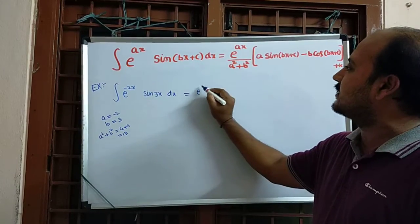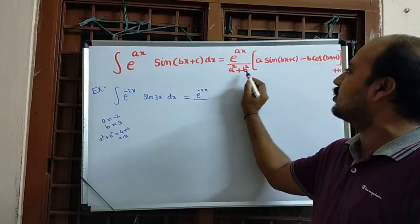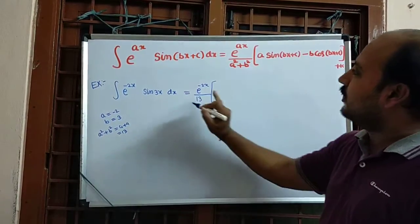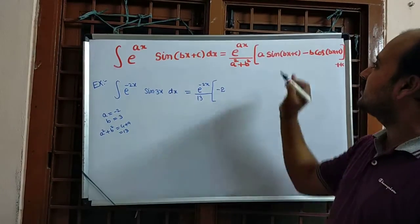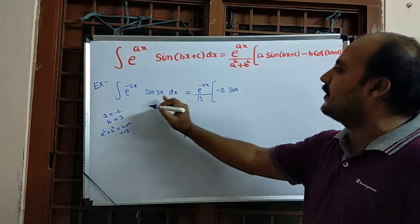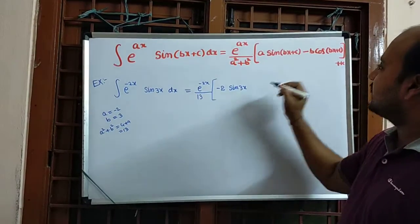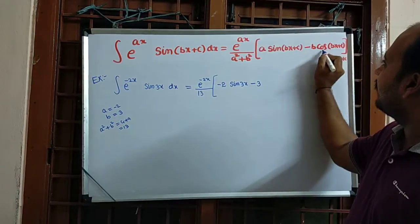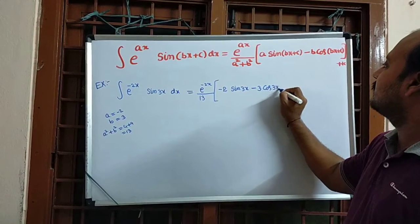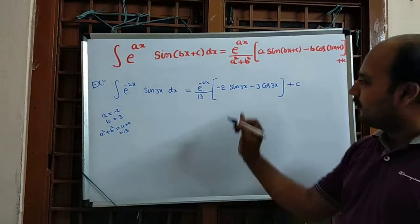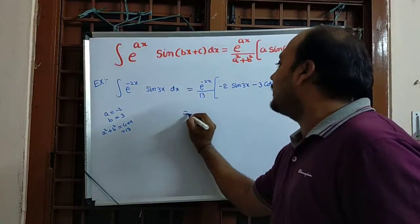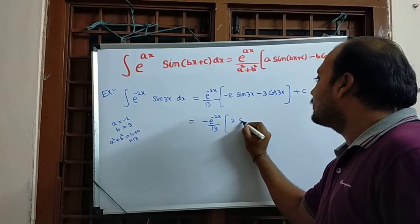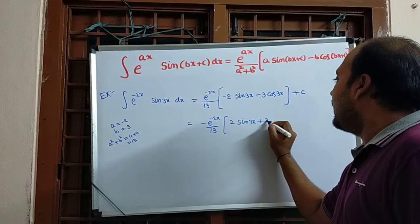Going to the formula: e^(−2x) divided by 13, inside the bracket: a value −2 multiplied by sin(3x + 5), minus b value 3 multiplied by cos(3x + 5), plus k. Taking out the common minus, we write: −e^(−2x) / 13 · (2 sin 3x + 3 cos 3x) + k.